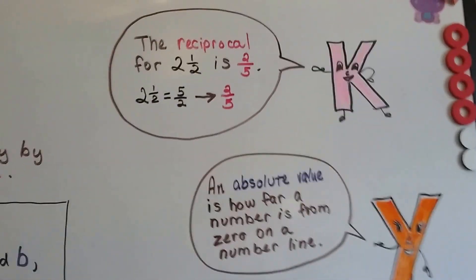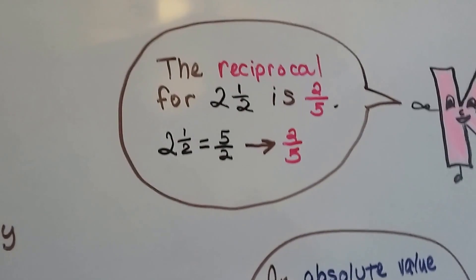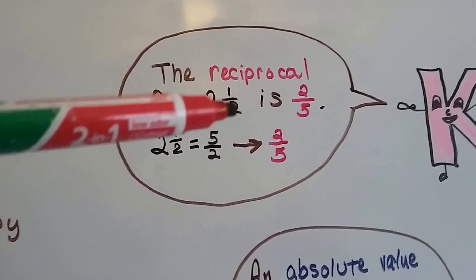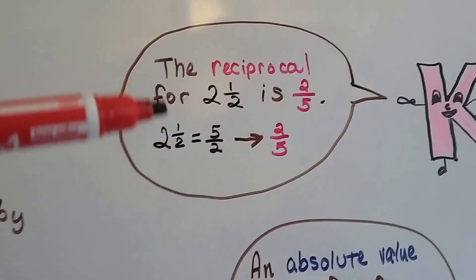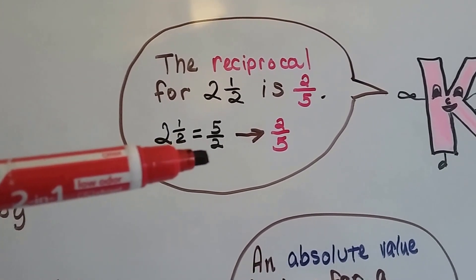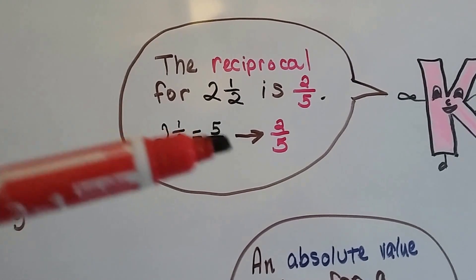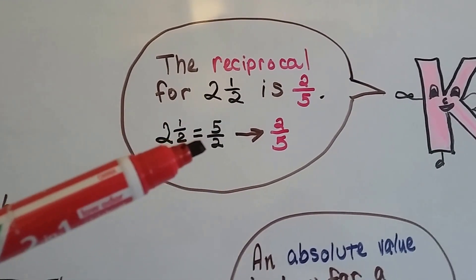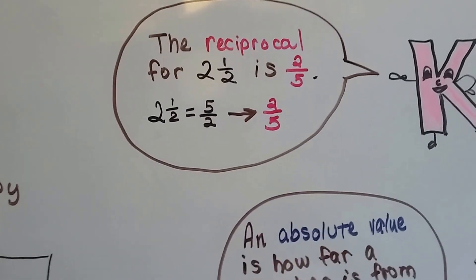When we have something like 2 1⁄2, like a whole number with a fraction, a mixed number, we can turn it into an improper fraction, like 5 over 2. 5 halves. And its reciprocal is going to be 2 5ths. Just turn it into an improper fraction and then flip it around.